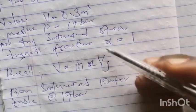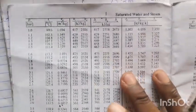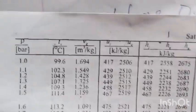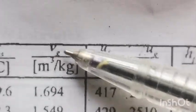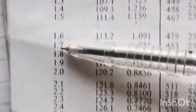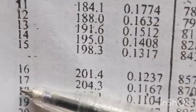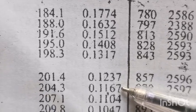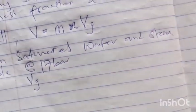We look through our steam table — saturated water and steam table — corresponding to 17 bar. This is the pressure line and this is the specific volume line. Going through the pressure line to obtain 17 bar, the specific volume at that point is 0.1167 meter cube per kilogram.